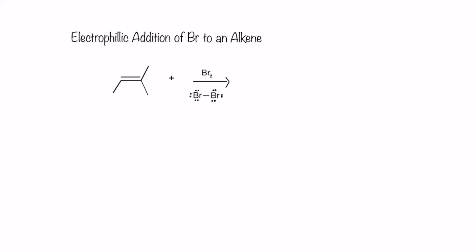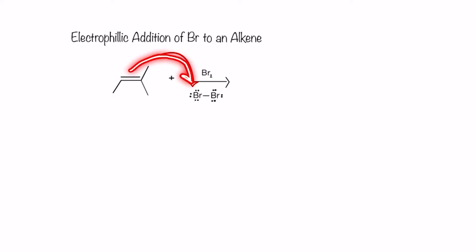From the previous videos, we know that an alkene is a really good nucleophile because it can break its double bond and donate that as electron density. Therefore, our Br2 molecule is going to act as our electrophile. So we can draw an arrow going from the double bond on the alkene over to the bromine. Remember that the arrow shows the flow of electron density, so this alkene is handing over its electron density, and that's what makes it a very good nucleophile.